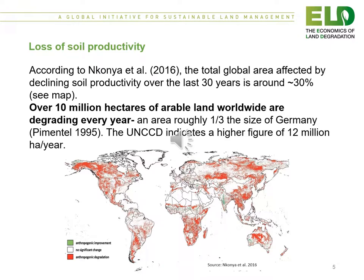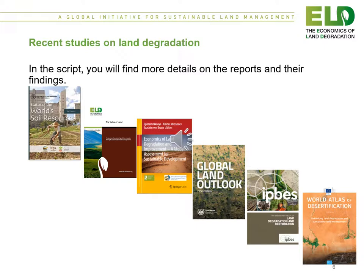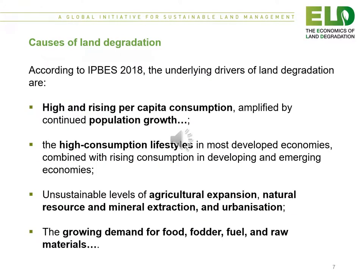See the map included in this slide. Over 10 million hectares of arable land worldwide are degrading every year — equivalent to an area roughly one-third the size of Germany. The UNCCD indicates a higher figure of 12 million hectares per year. There are several recent studies on land degradation and more details can be found in the attached links.